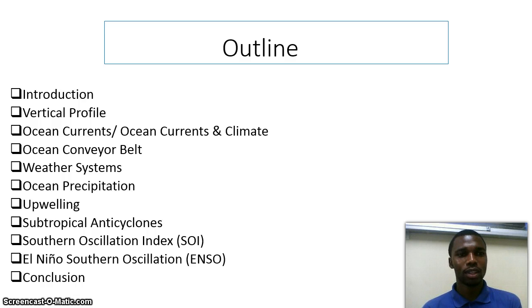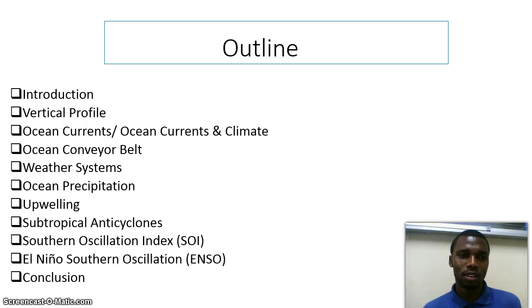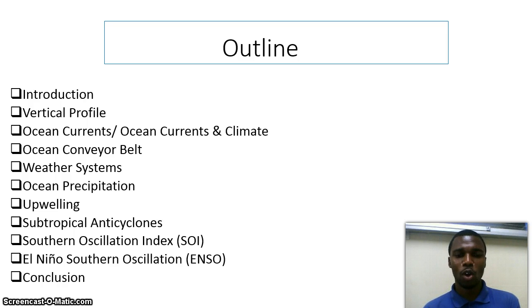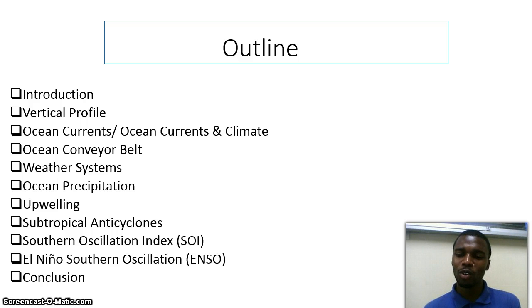The outline of my topic is as follows. Firstly, I'll have the introduction, I'll describe the vertical profile of the ocean, the ocean currents, the ocean currents and climate, the ocean conveyor belt, the weather systems, ocean precipitation, upwelling, the subtropical anticyclones, followed by the Southern Oscillation Index (SOI), I'll also describe ENSO, which is the El Niño Southern Oscillation, and then I will conclude.